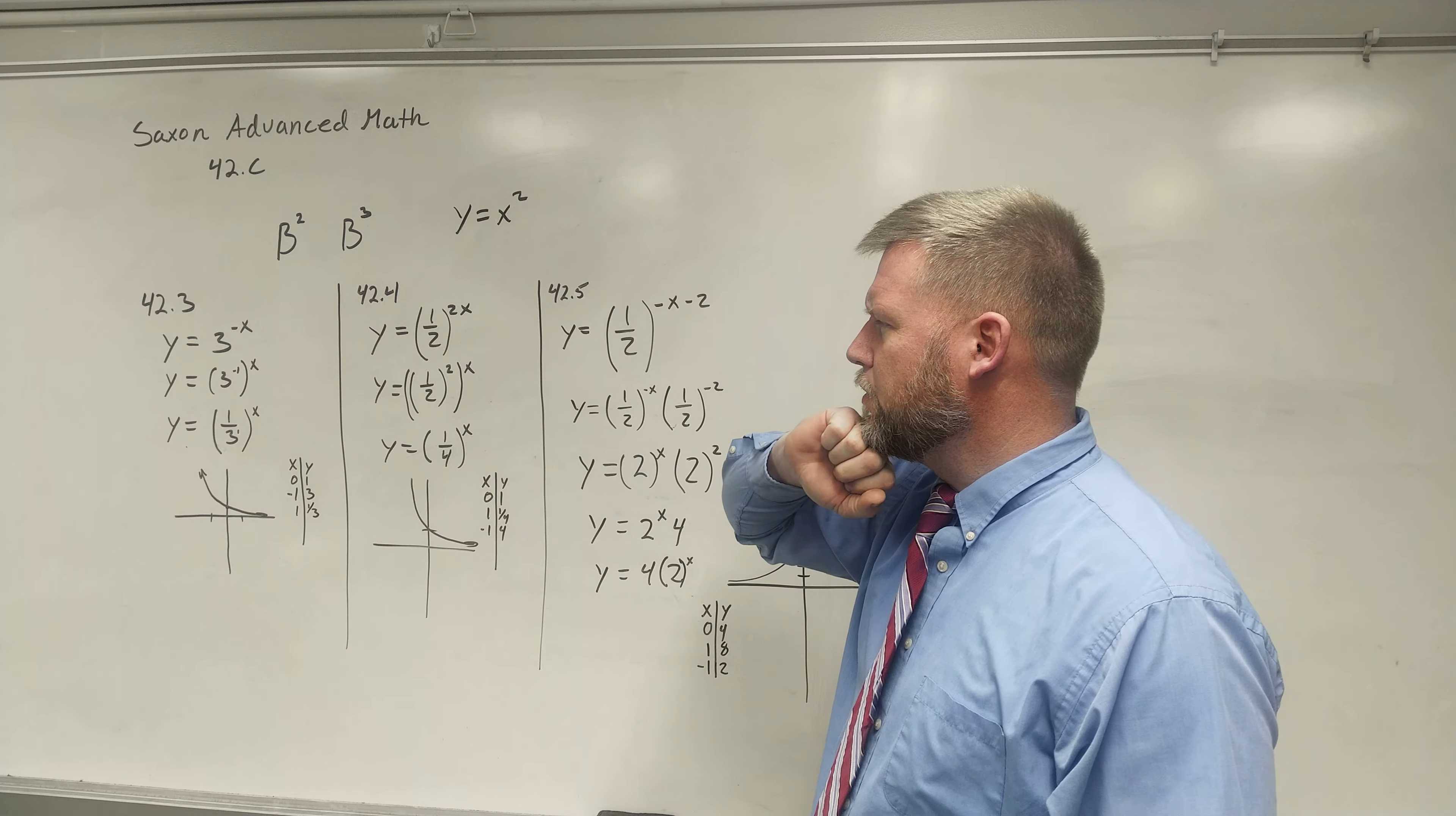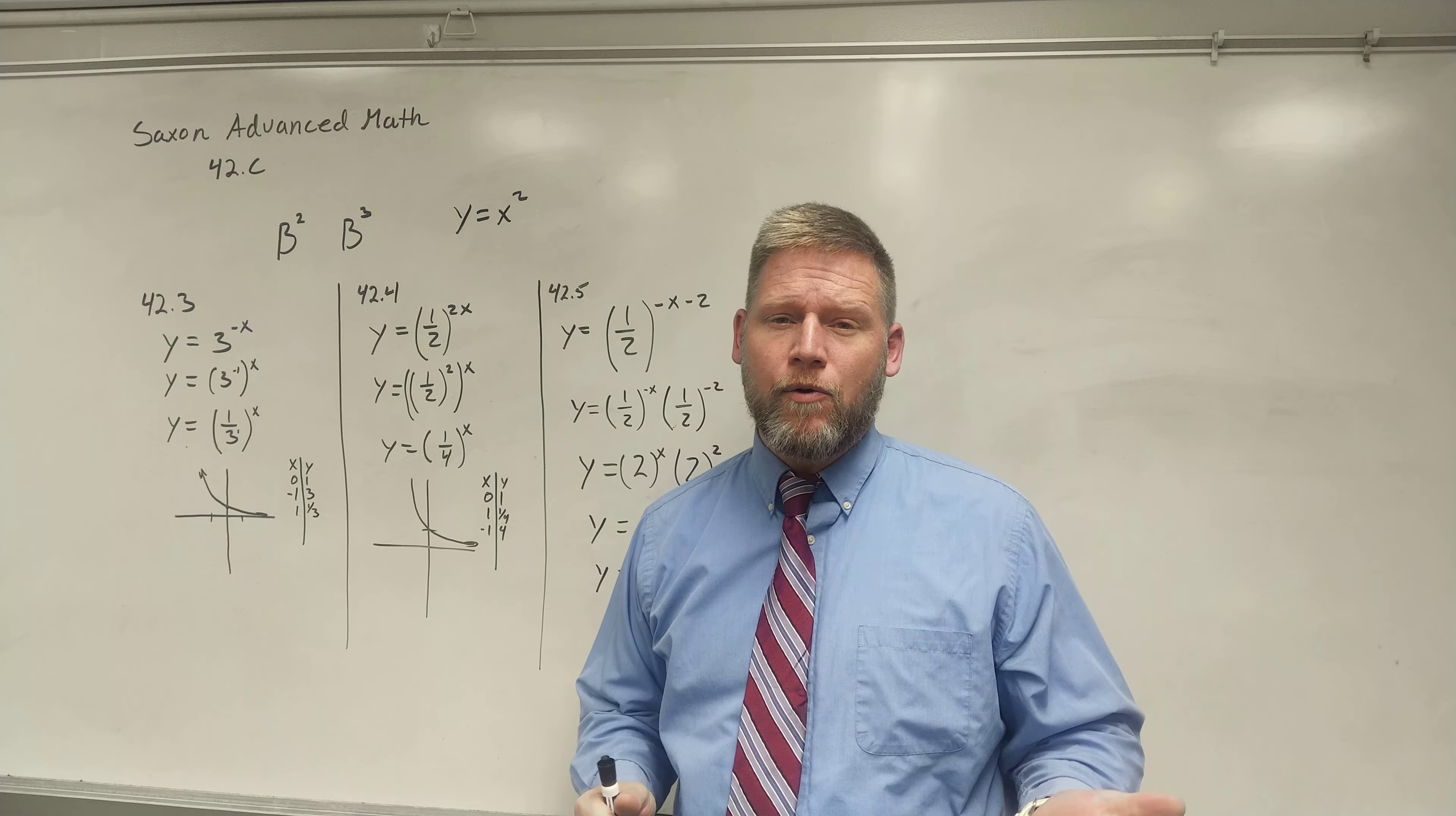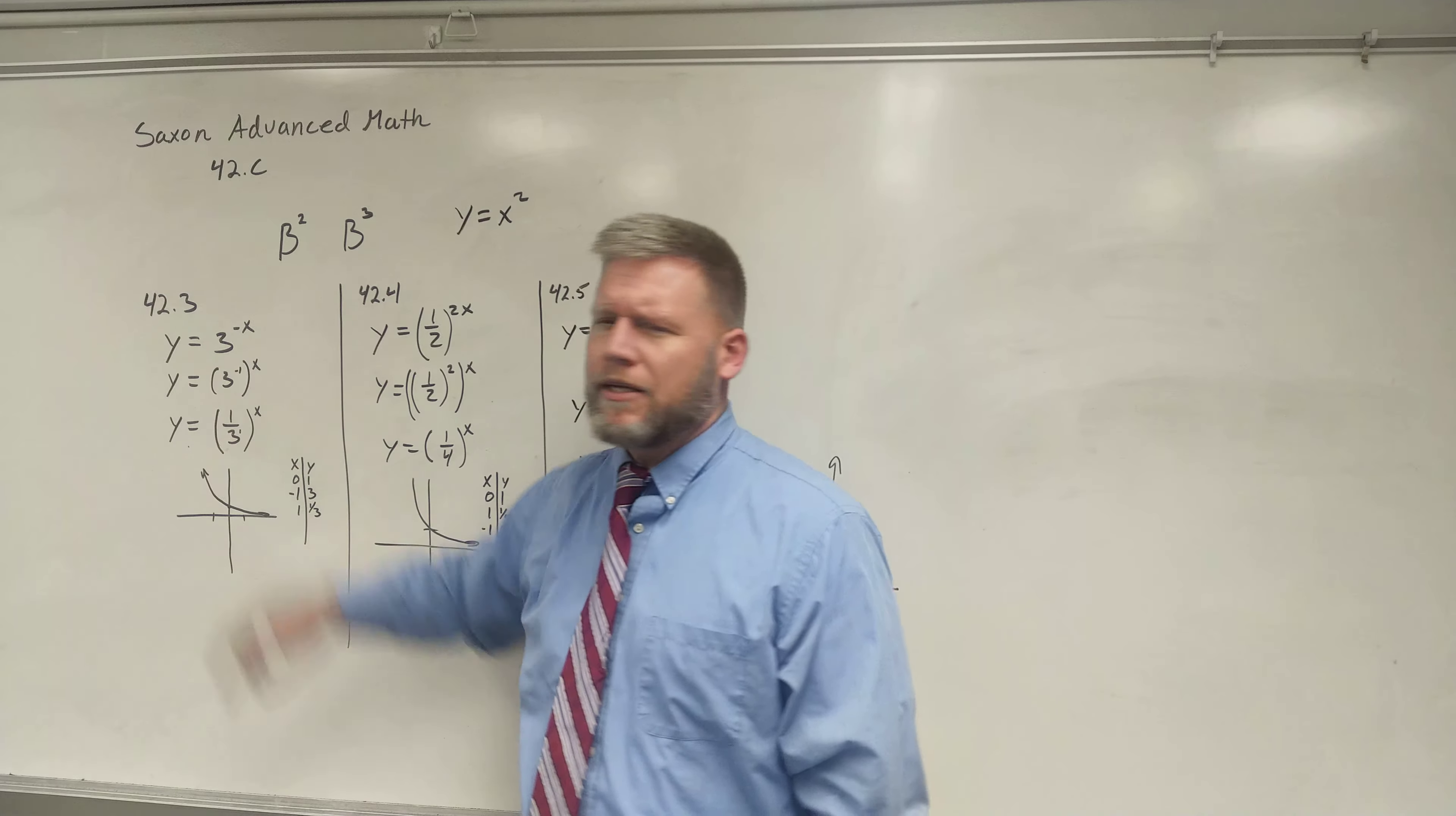42.3 is the first example for 42C, and that is asking us to graph y equals 3 to the negative x. Now, if it was just 3 to the x, we've already graphed that. That would be fairly easy. Unfortunately, that negative up top makes it a little bit different.